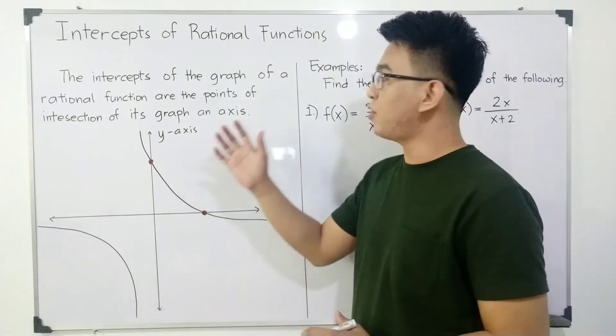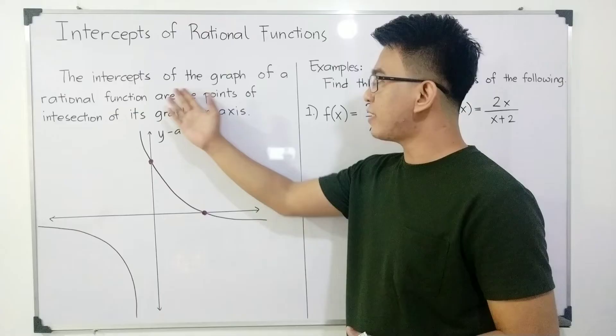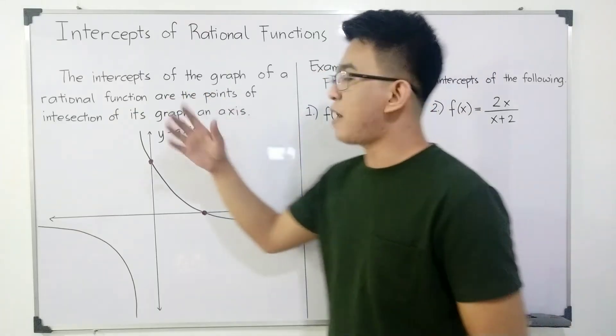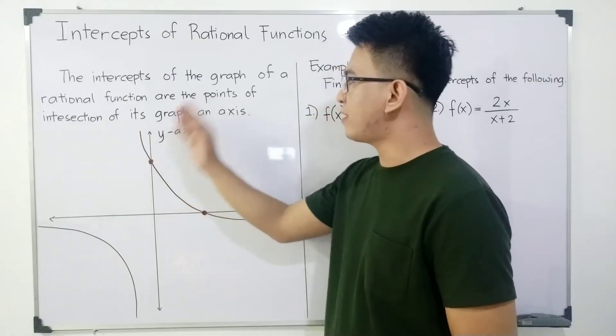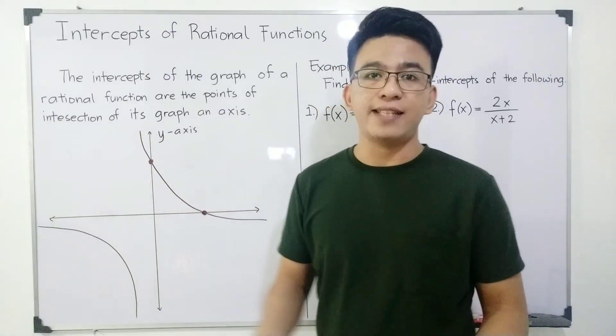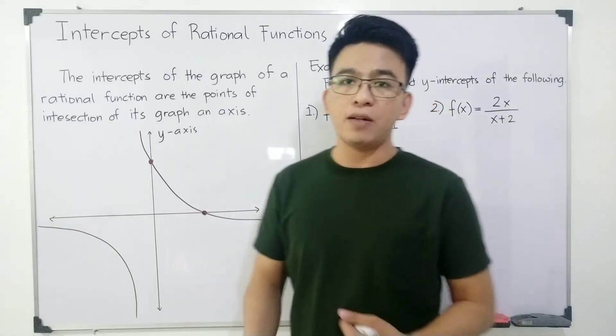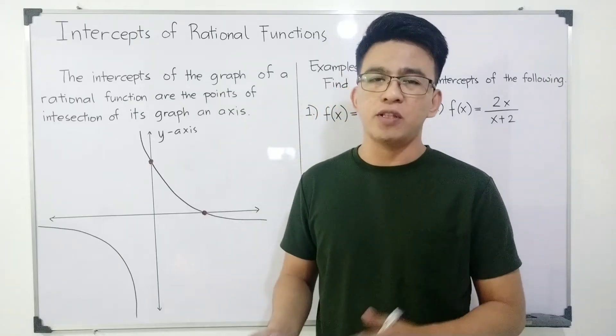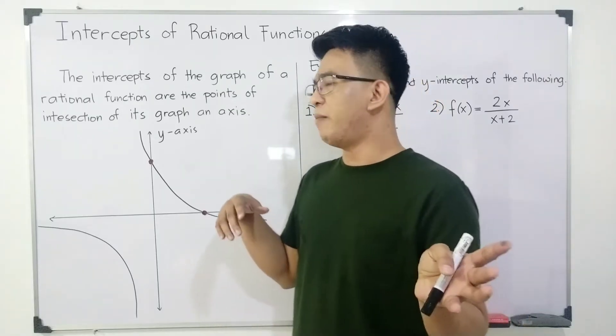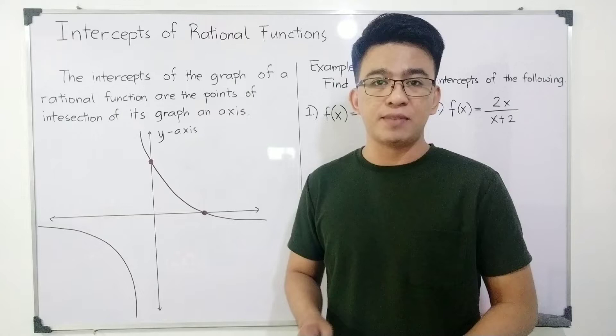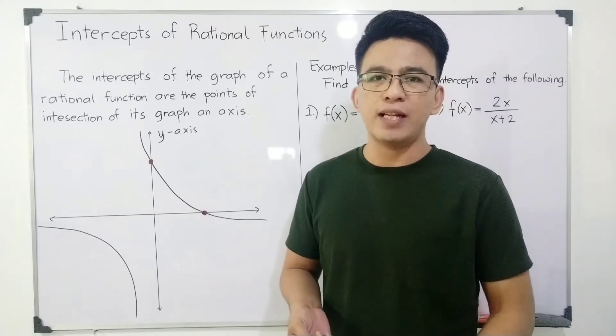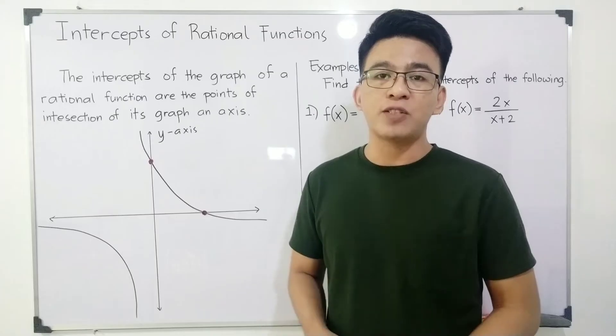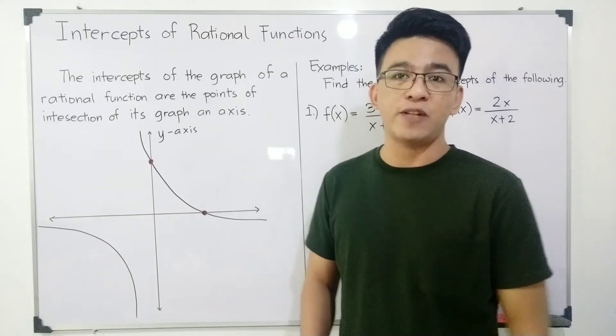So I have here guys the definition of intercepts. The intercepts of the graph of a rational function are the points of intersection of its graph and an axis. When you were studying linear function and quadratic function, you already encountered the word intercepts. Let me refresh you so we can understand how to solve for intercepts of a rational function.